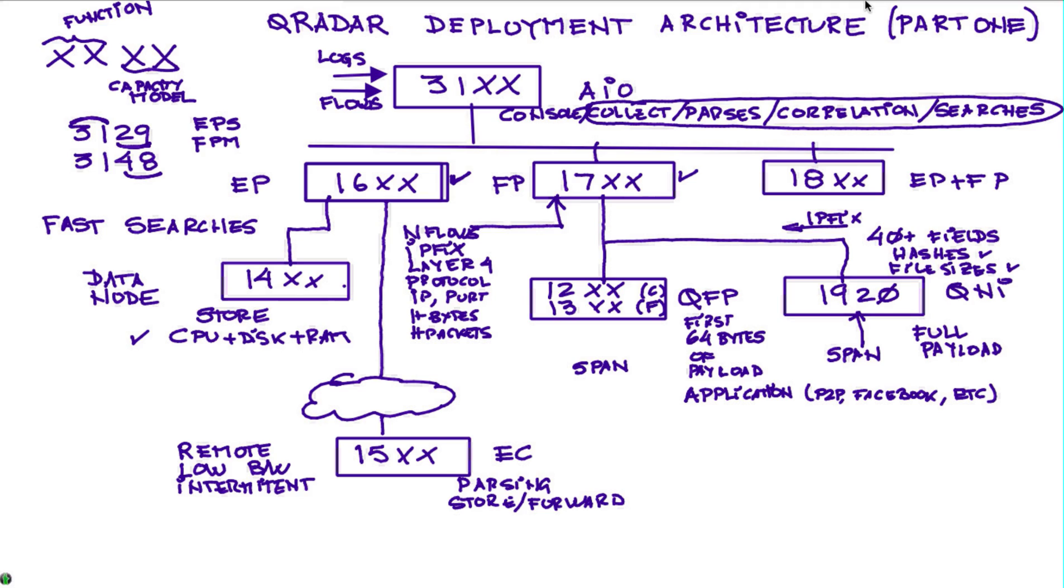The events are collected and processed by the event processor and stored at the data node. When the search is performed the job is divided and this thing can dramatically speed your searches if you have multiple SOC operators performing lots of searches over long periods of time. That's the way you speed that up.